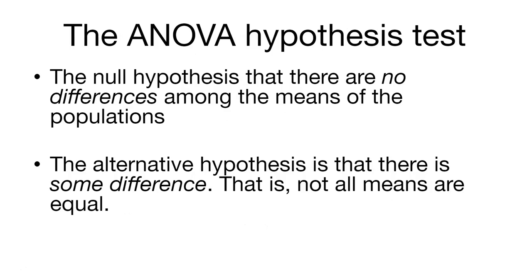The ANOVA hypothesis test says that there are no differences among the means of the populations. So that's similar to what we said in the two-sample t-test. But here we're saying there is no difference between all of the means of the populations. We can go from 1, 2, 3, 4, 5.